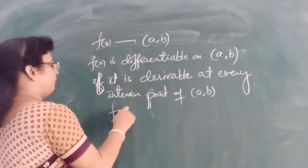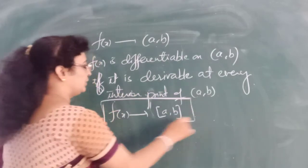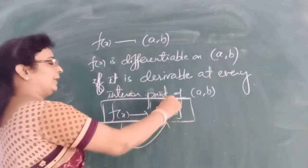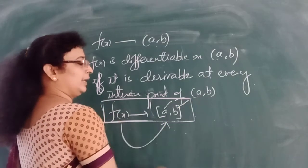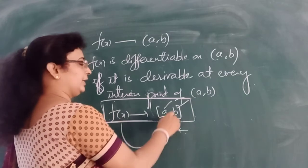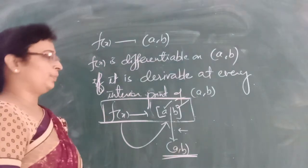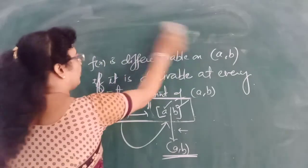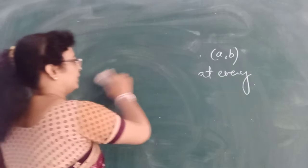Similarly, if f(x) is a function defined on the closed interval [a, b], then this function is differentiable on [a, b] if it is differentiable at a (checking RHD only), differentiable at b (checking LHD only), and further differentiable at each and every point of the open interval (a, b). If the function is differentiable at every point of the closed interval [a, b], then we say the function is differentiable on the closed interval.